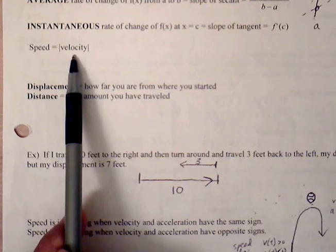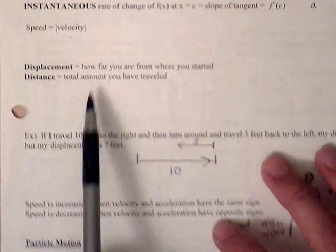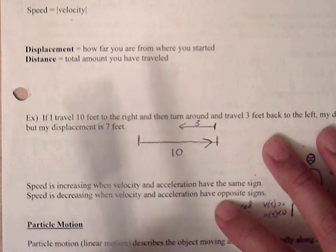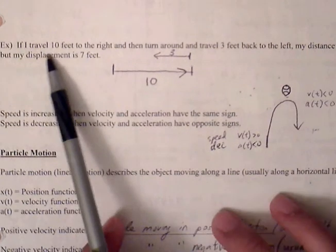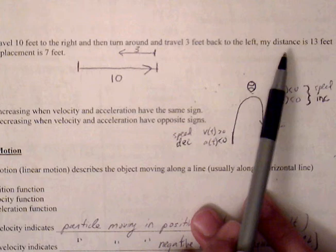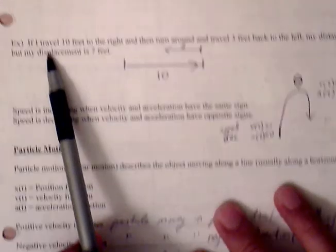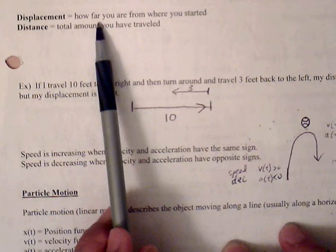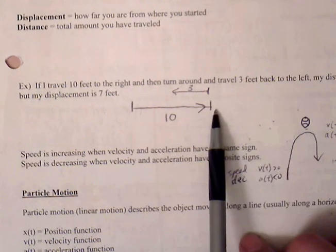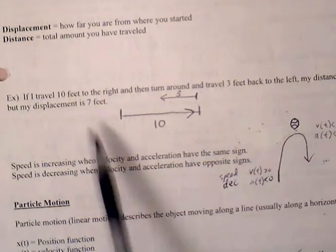Speed is simply the absolute value of the velocity function, or the absolute value of the velocity value. Displacement is how far you are from where you started, and distance is the total amount you have traveled. For instance, if I travel 10 feet to the right and then turn around and travel 3 feet back, my total distance is 13 feet. However, my displacement — the distance from starting point to endpoint — is simply 7 feet, since we went 10 feet forward and came back 3, making a net forward progress of 7 feet.